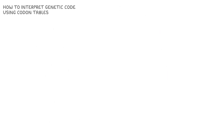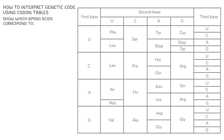Finally, let's look at how to interpret the genetic code using codon tables. Codon tables like this one show which amino acids correspond to mRNA bases or DNA bases. We can tell this codon table is using mRNA bases because it includes the base U for uracil. If it was using DNA bases, it would have included T for thymine instead. Questions around this subject might ask you to work out which amino acids are coded for by a specific DNA sequence using a codon table.